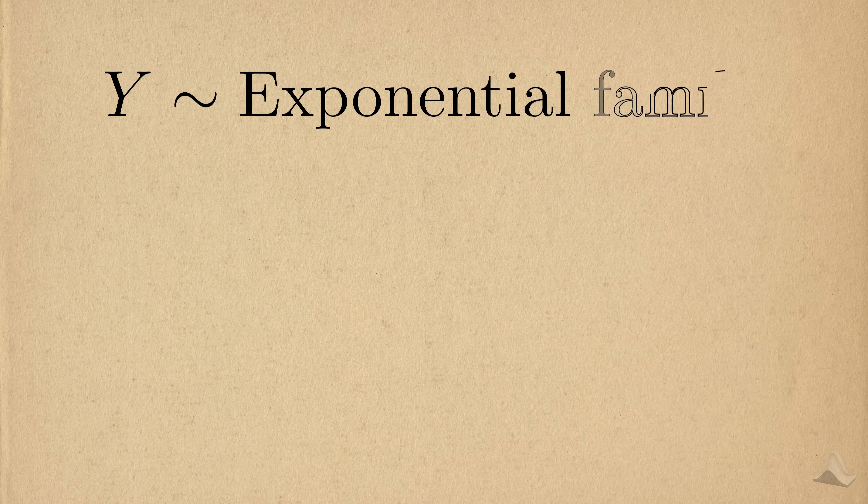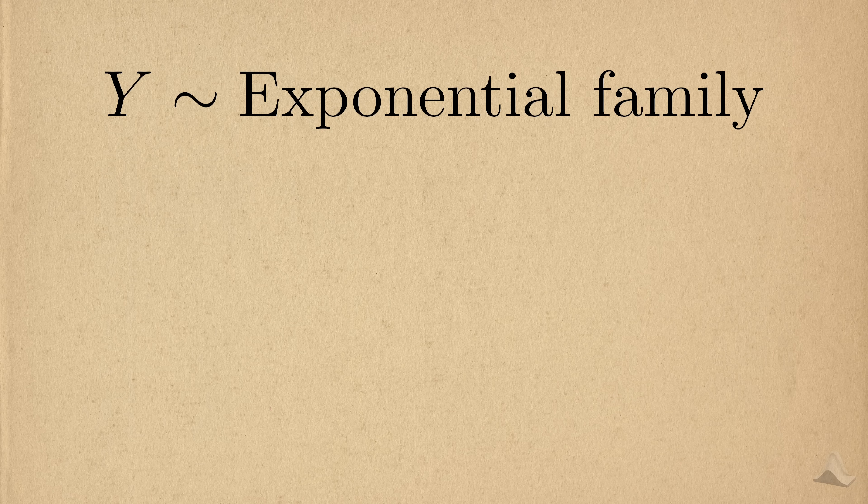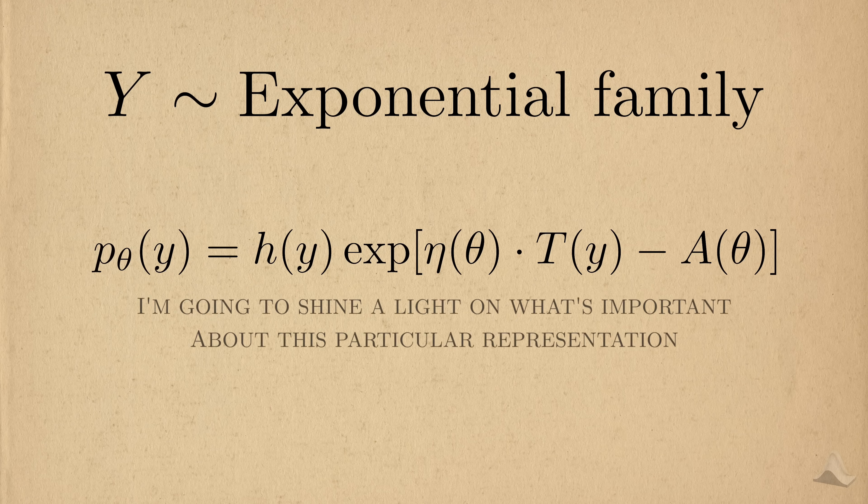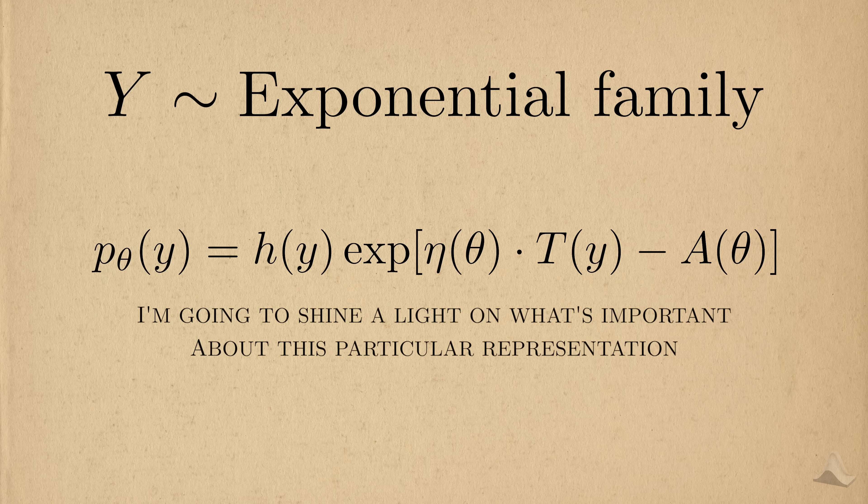I said that the outcome needs to come from an exponential family. What is that? An exponential family is any set of probability distributions that can be written with the following structure. Okay, I know that's a lot of notation, but stay with me. I'm going to shine a light on what's important about this expression.